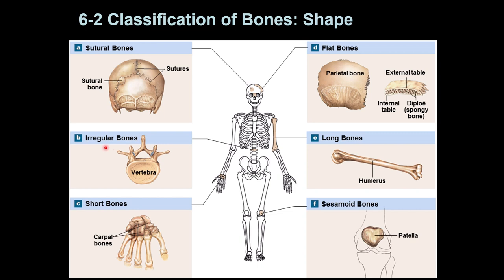The second type is irregular bones — they do not have any specific physical shape. A good example is the vertebrae. You also see irregular bones in some of the bones in the skull, such as facial bones, and in the pelvic bone.